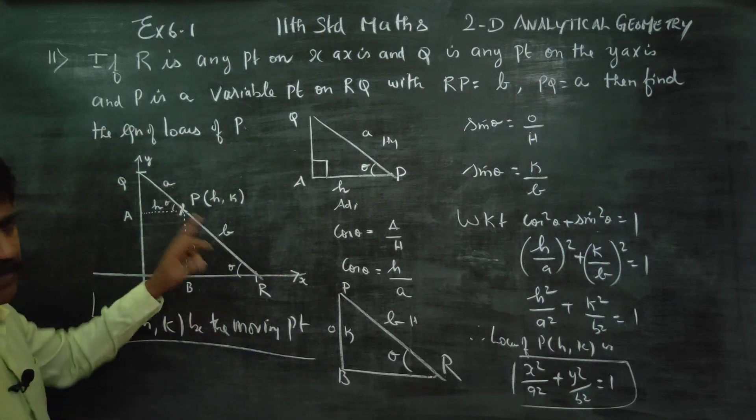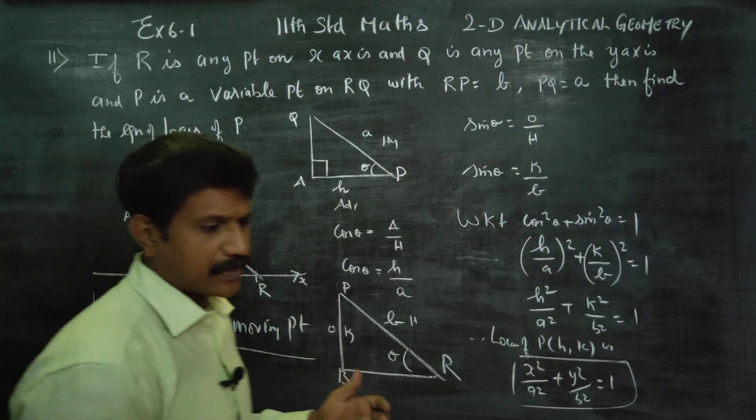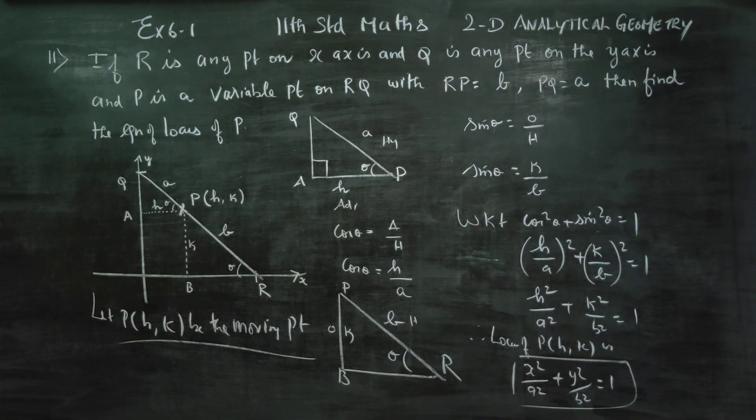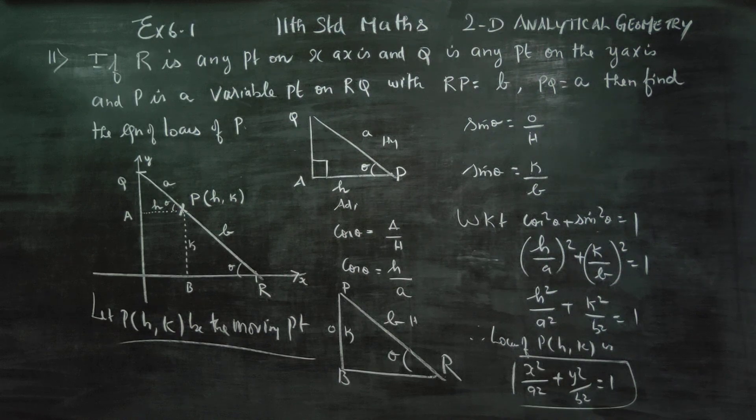So this method uses the trigonometric identity. The internal ratio formula and Pythagoras theorem would be a little bit lengthy. But using cos theta and sin theta with the identity cos square theta plus sin square theta equals one, you can get the answer directly. It's a very easy method. Thank you.